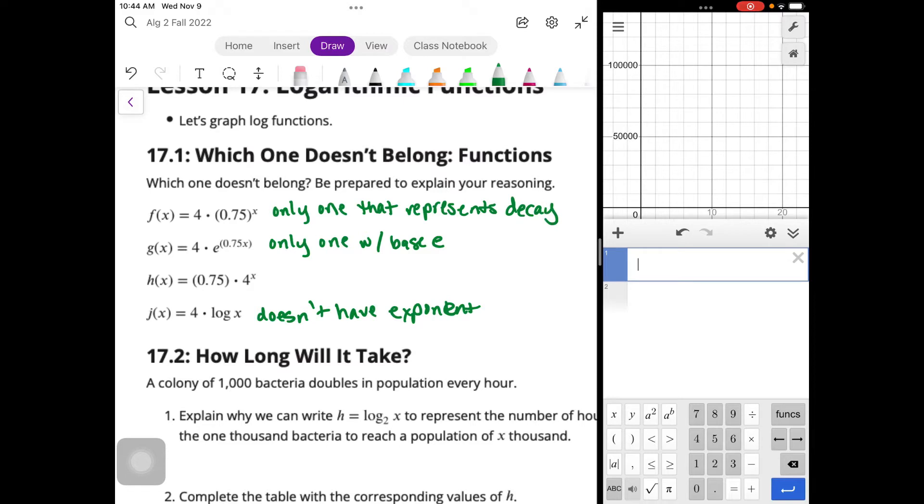You could say that this is the only one that represents decay because your growth factor is less than one. Then you could say this one is the only one with an initial value of 0.75. All the rest are 4. So there are lots of answers that you could give for that one.